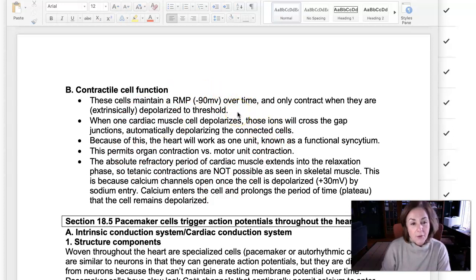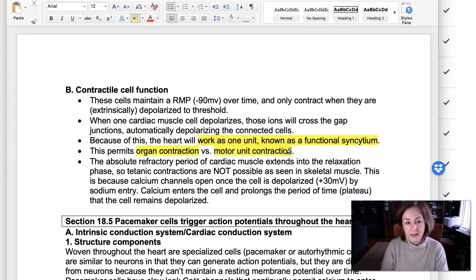And so this is a really important part about how the heart functions. So this is a little bit of the anatomic basis of how the heart is going to function as an organ. So you can see I'm talking about that here, how it's going to work as one unit. That's known as a functional syncytium, that we're going to have an organ contraction, not a motor unit contraction like we talked about last semester.